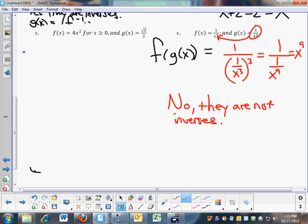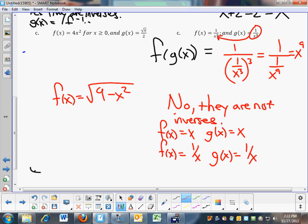No, they are not inverses. Here's two examples where functions are inverses of each other. If you have f of x is equal to x, and g of x equal to x, those are inverses of each other. Here's another one. f of x equals 1 over x. g of x equals 1 over x. Those work. In fact, I think that we could even do f of x equals the square root of 9 minus x squared. And g of x equals the square root of 9 minus x squared. I think that those work as well. So, there's a lot of examples where you can have two that are identical, and they are inverses of one another. But it doesn't always work like that.